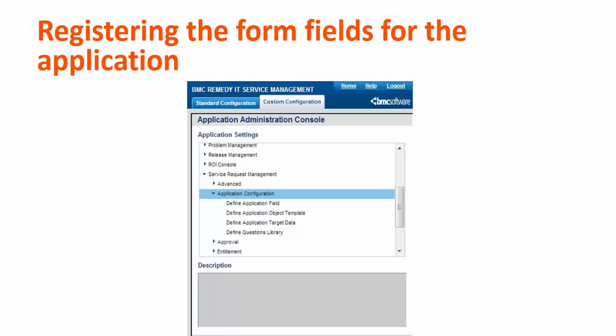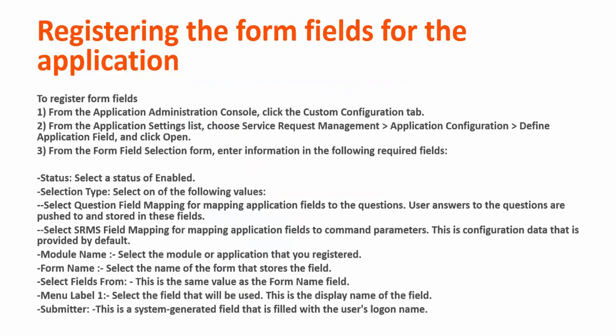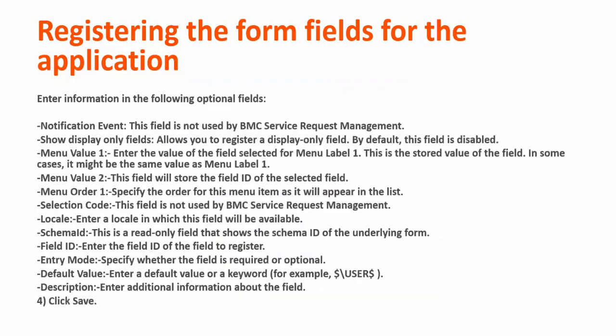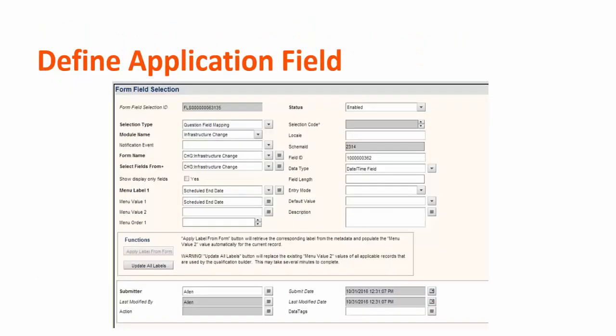Click on application configuration. First, we need to define the application field and then define the application target data. The important fields to remember are the selection type, model name, form name, menu label, menu value, field ID, and entry mode.